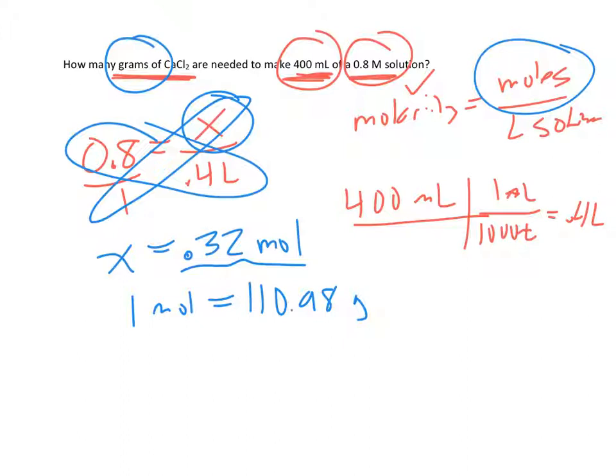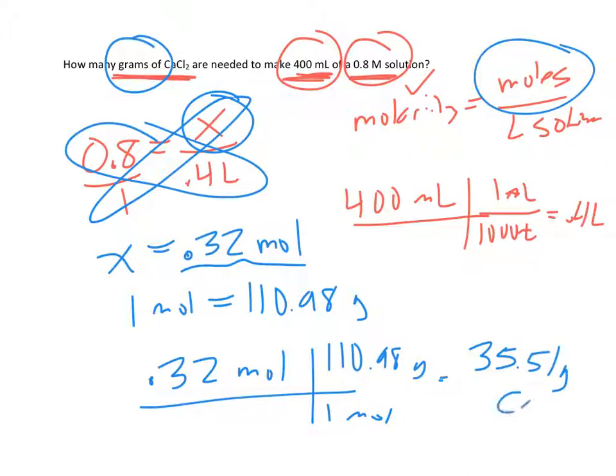Okay, I have 0.32 moles, so I have about a third. So just to do this out, 0.32 moles, every 1 mole is 110.98 grams. So I'll just multiply that out, and I get 35.51 grams. So that's how many grams of CaCl2 it will take to make this volume at this concentration. Again, this big M, you need to be able to recognize that that's molarity and plug it in the appropriate spot.